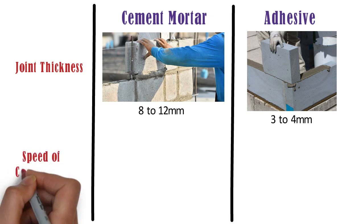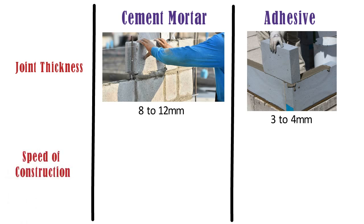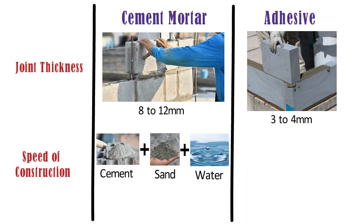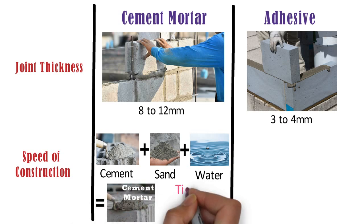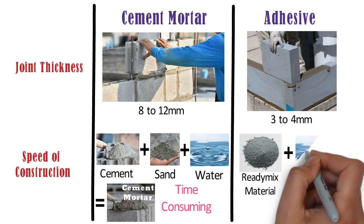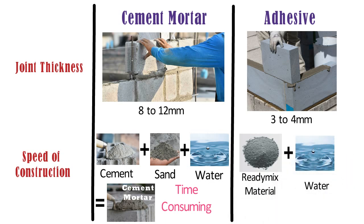Speed of construction. In case of cement sand mortar, raw materials such as cement, sand, and water are to be correctly proportioned and then mixed carefully to obtain the paste, which is a time-consuming process. Whereas, AAC block adhesive is a ready-mix material and only water is to be added for application, so the speed of construction is more.